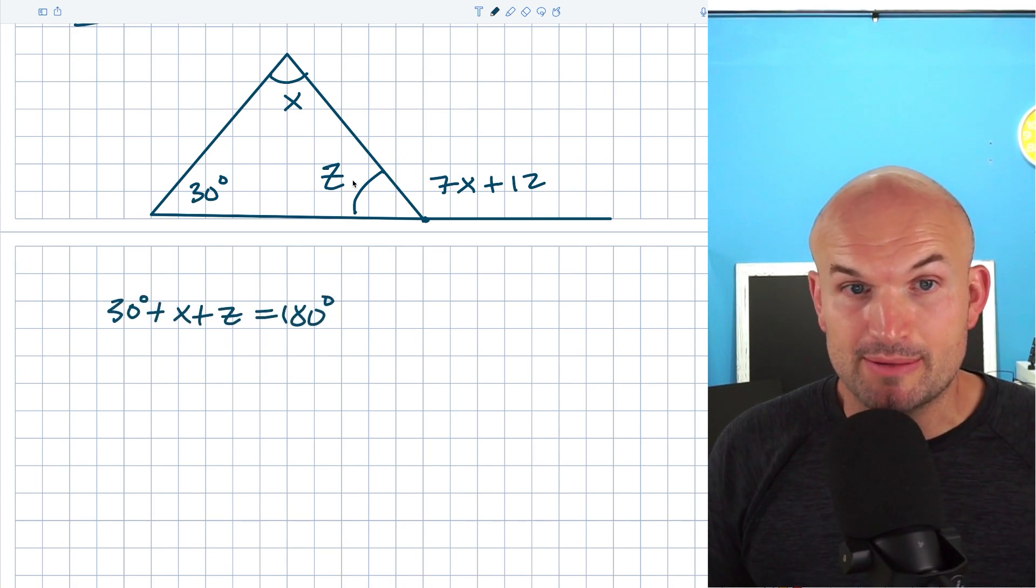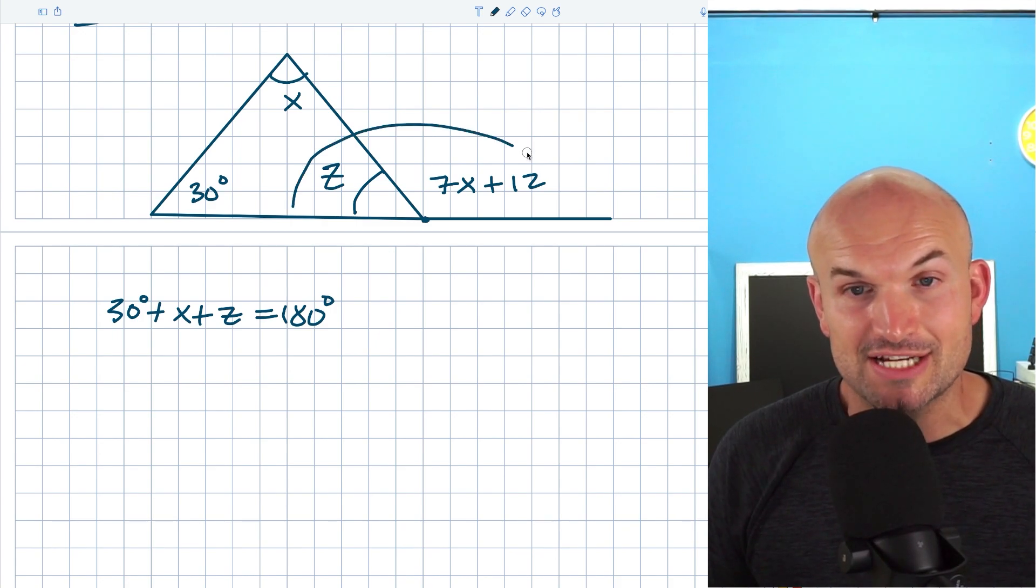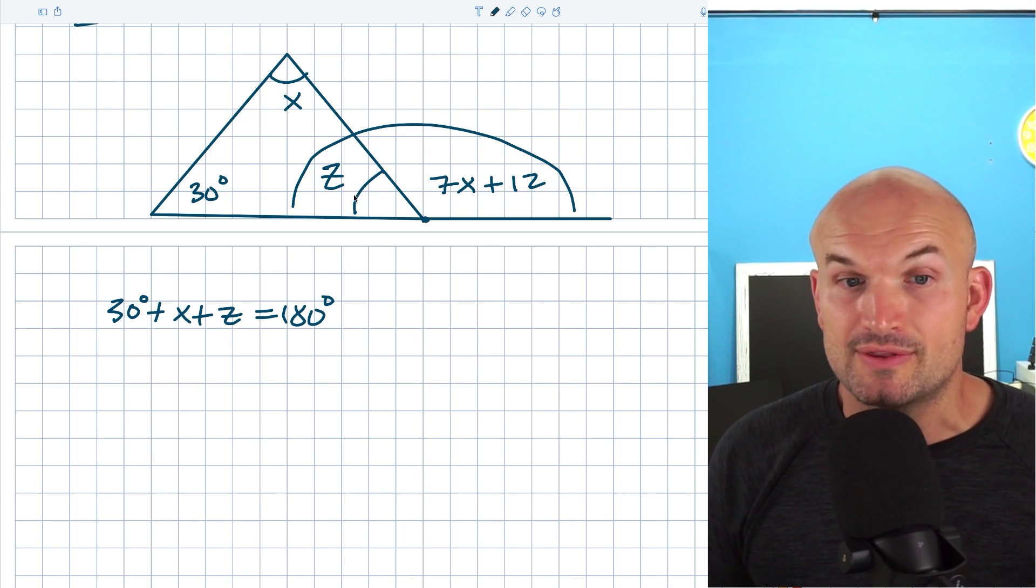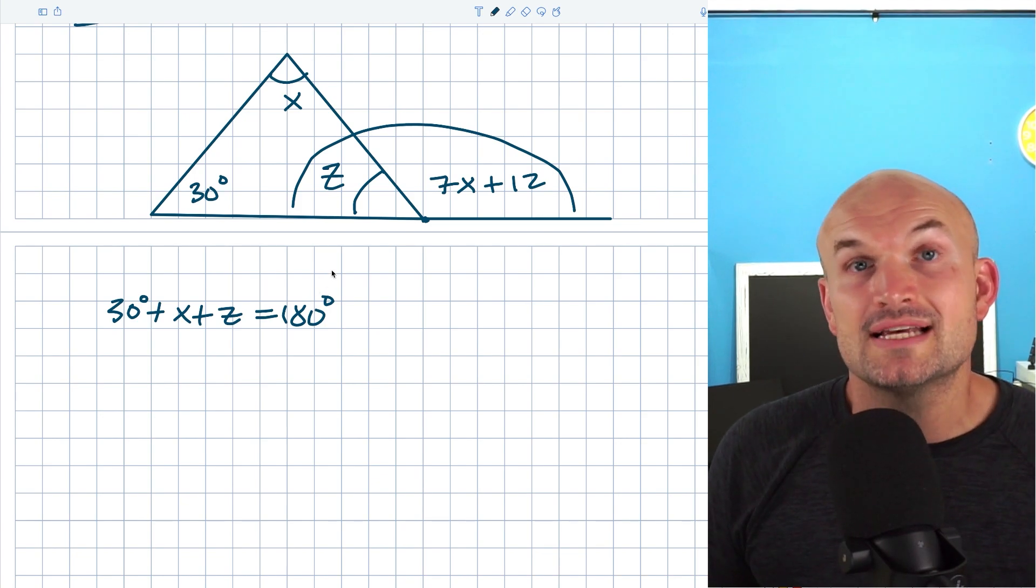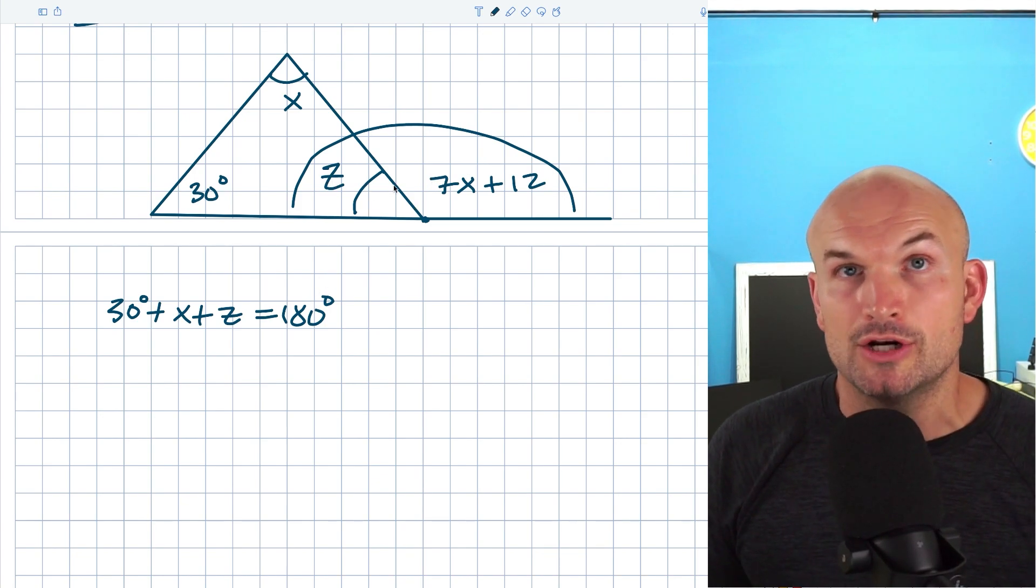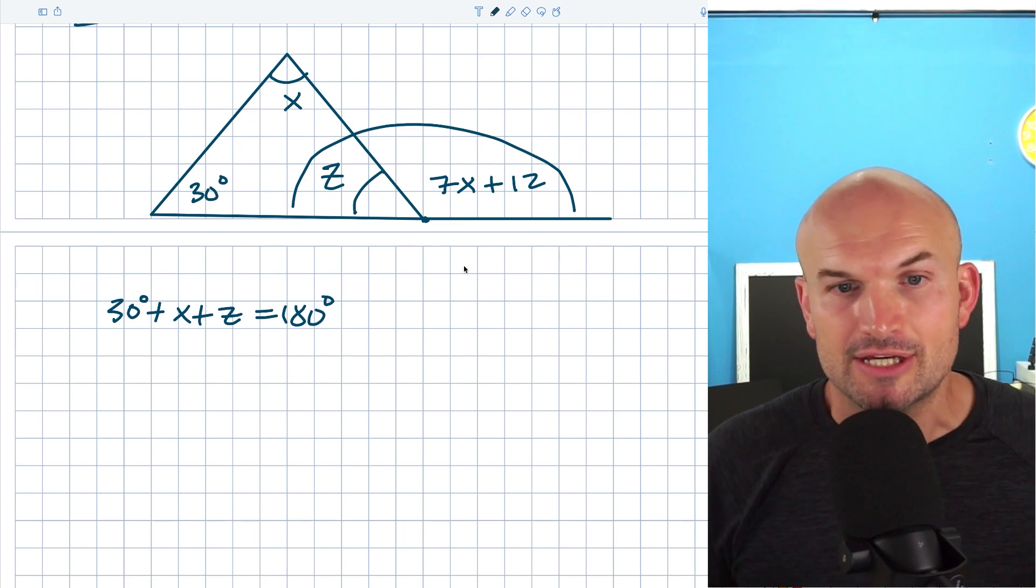Let's take a look at the relationship between the interior and this exterior angle, Z and 7X plus 12. Notice that these are adjacent angles. They share a vertex, they share a side, which are adjacent, and they make up a line. So therefore they are a linear pair as well as supplementary, meaning that these two angles add up to 180 degrees. So I can write that relationship.